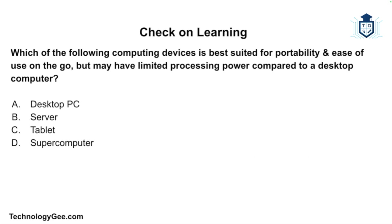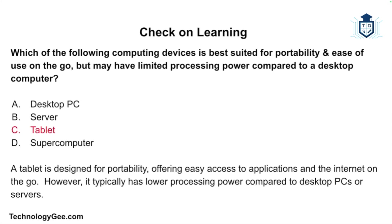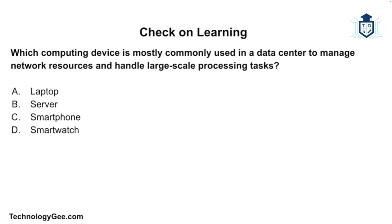Now it's time for our check on learning. Which of the following computing devices is best suited for portability and ease of use on the go, but may have limited processing power compared to a desktop computer? Would it be a desktop PC, a server, a tablet, or a supercomputer? The correct answer is a tablet. A tablet is designed for portability, offering easy access to applications and the internet on the go; however, it typically has lower processing power compared to desktop PCs or servers.